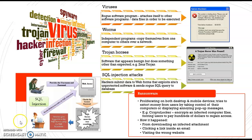Number two is worm. What is a worm? A worm is an independent program — it just exists and enters your network layer or your computer. It will copy itself from one computer to others over a network. That's why you can suddenly have a worm. An example is a pop-up message that says: 'The system is shutting down. This is a worm in progress. Log off. Any unsafe changes will be lost. This shutdown was initiated by an authority system.' This is an example of a worm.